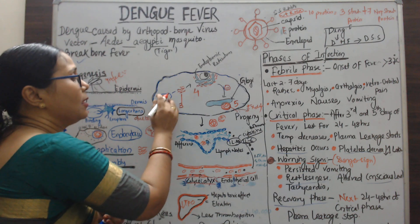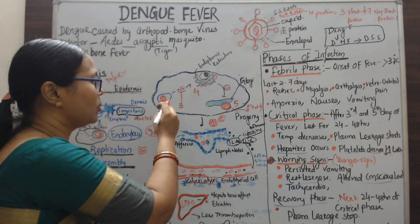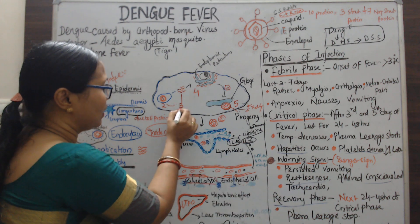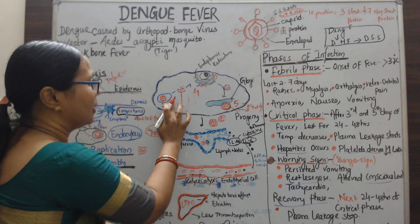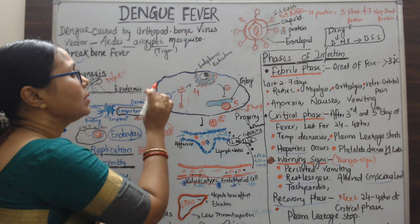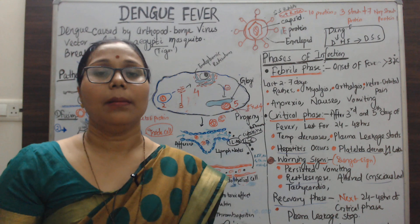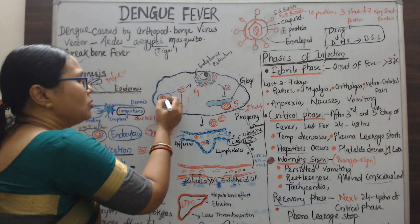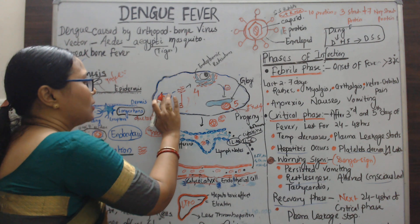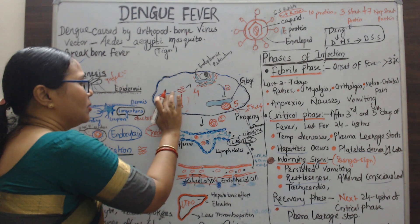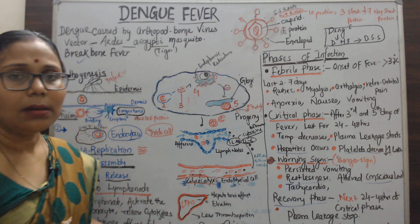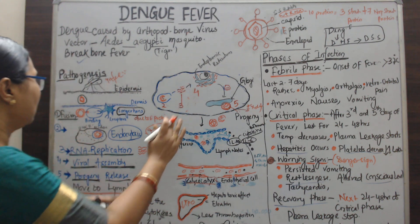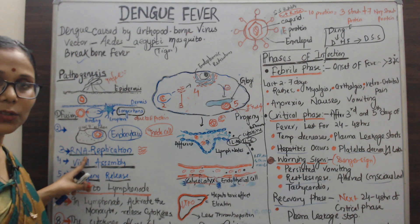Now the genetic material needs to move out from the vacuole into the cytoplasm. To do this, the virus creates an acidic environment with a pH of less than seven. Due to this, the outer coat is degraded and the RNA moves out into the cytoplasm. This is the RNA replication stage.